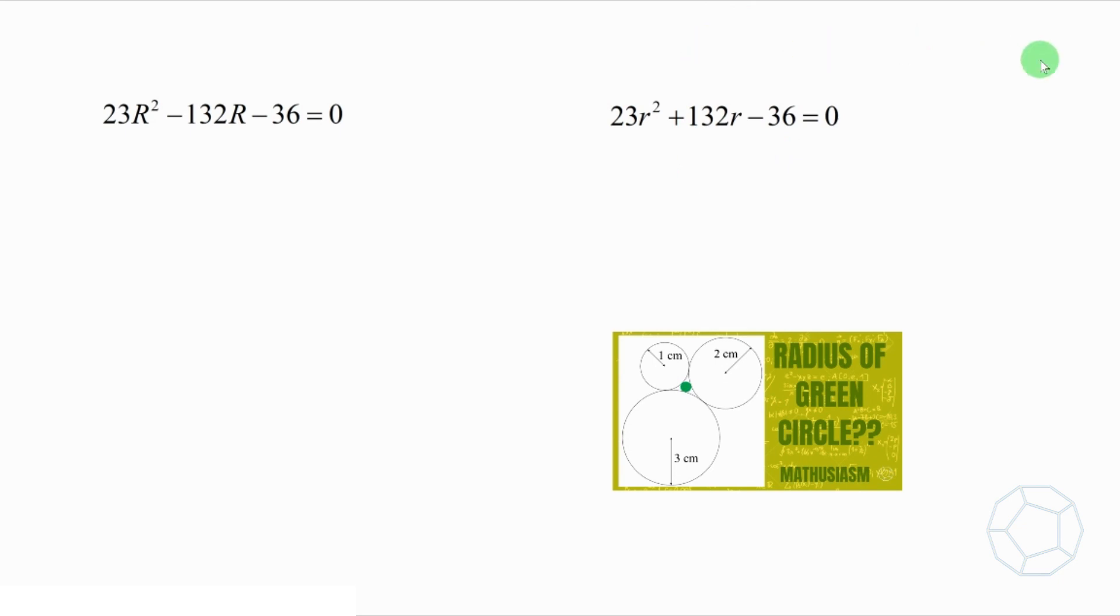Go back to the original equation. Now, we can use cross method to factorize it. So, it's equal to 23R plus 6 times R minus 6 equals 0. Therefore, R is equal to 6 or negative 6 over 23 which is rejected as length must be positive. So, the radius of the largest circle is 6cm.